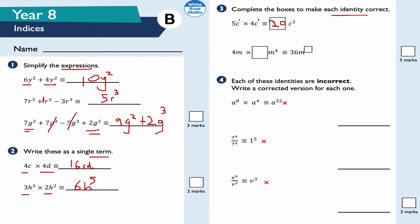Next: 4m times something times m to the 4 is equivalent to 36m to the something. 4 times 9 is 36, so the missing coefficient is 9. For the power: m to the 1 times m to the 4 — 1 plus 4 is 5 — so the answer is 9m to the 5.